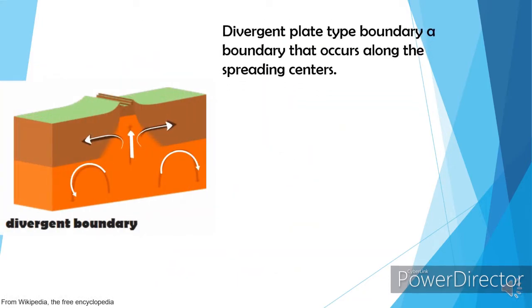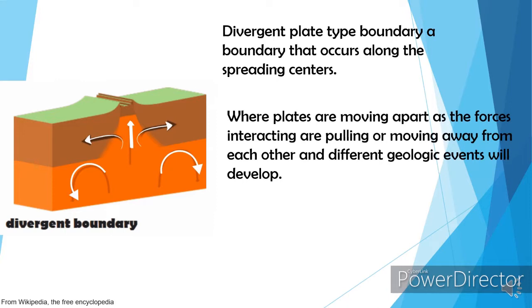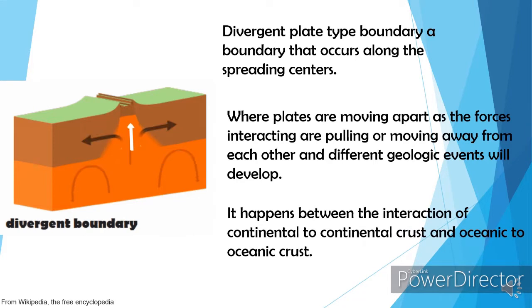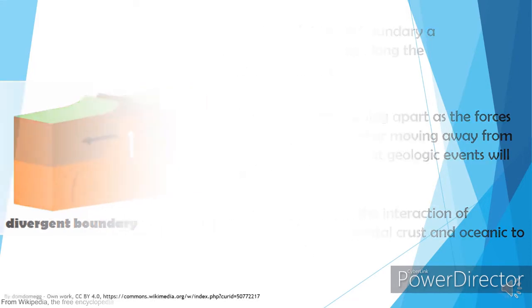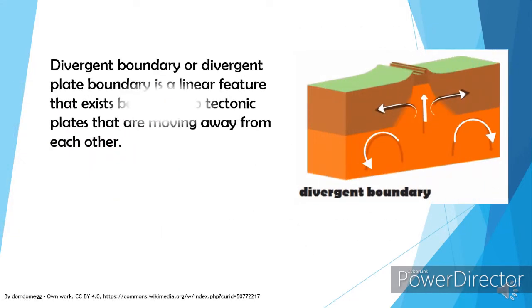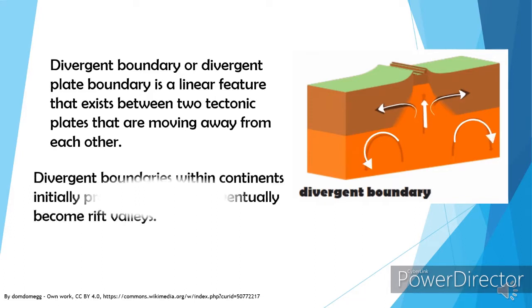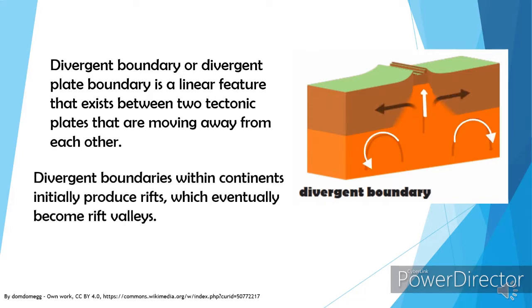Divergent plate boundary is a boundary that occurs along the spreading centers, where plates are moving apart as the forces interacting are pulling or moving away from each other, and different geologic events will develop. It happens between continental-to-continental crust and oceanic-to-oceanic crust. Divergent boundaries within continents initially produce rifts, which eventually become rift valleys.